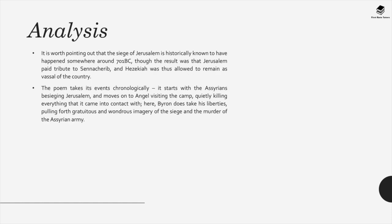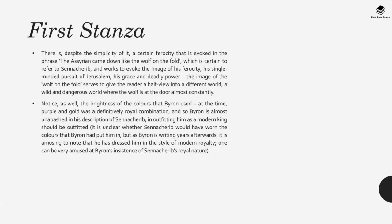Byron writes the poem's events chronologically, starting with the Assyrians besieging Jerusalem, then moving to an angel who visits the camp quietly killing everything it comes into contact with. Byron takes some liberties, pulling forth gratuitous and wondrous imagery of the siege and the murder of the Assyrian army.